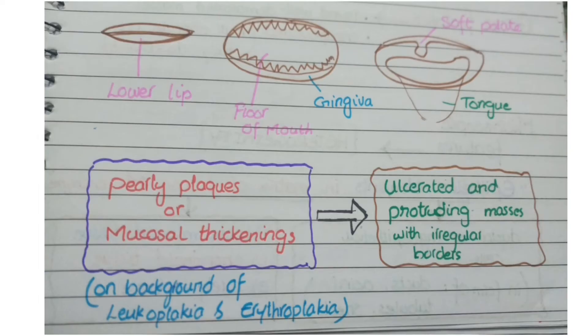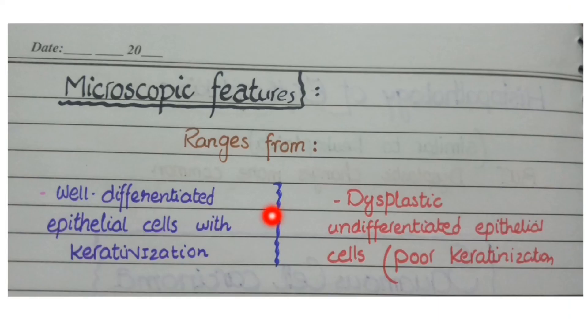Overall, in squamous cell carcinoma, on gross picture you see pearly plaques or mucosal thickening that develop into ulcerated and protruding masses with irregular borders. On the microscopic picture, you see either well-differentiated epithelial cells with keratinization, or undifferentiated epithelial cells with poor keratinization. This covers the morphology of squamous cell carcinomas of the oral cavity.